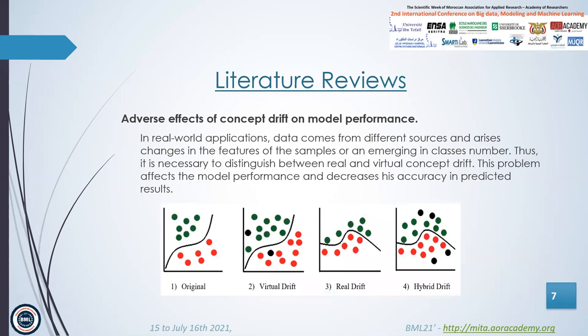Then, I have discussed the adverse effects of concept drift on model performance. In real-world applications, data comes from different sources and changes arise in the features of the samples or in the number of emerging classes. Thus, it is necessary to distinguish between real and virtual concept drift. This phenomenon affects model performance and decreases its accuracy in predicted results. In principle, there are three types of concept drifts: real drifts, virtual drifts, and hybrid drifts.